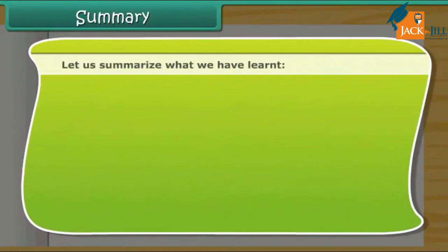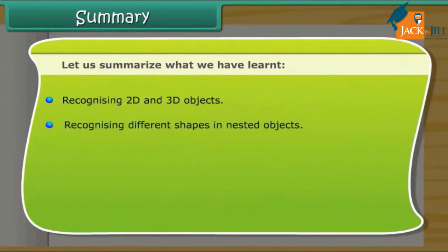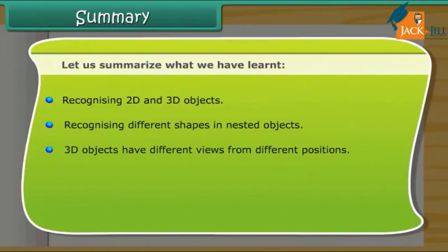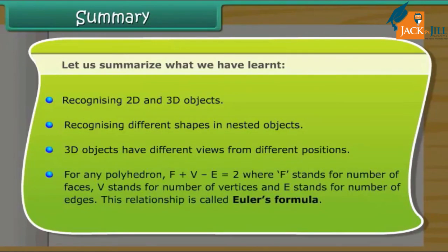Let us summarize what we have learned: recognizing 2D and 3D objects, recognizing different shapes in nested objects, and understanding that 3D objects have different views from different positions. For any polyhedron, F + V − E = 2, where F stands for number of faces, V stands for number of vertices, and E stands for number of edges. This relationship is called Euler's formula.